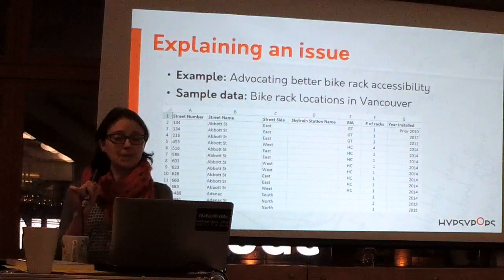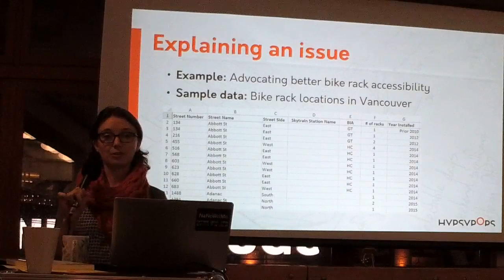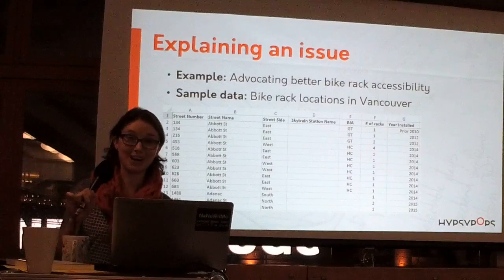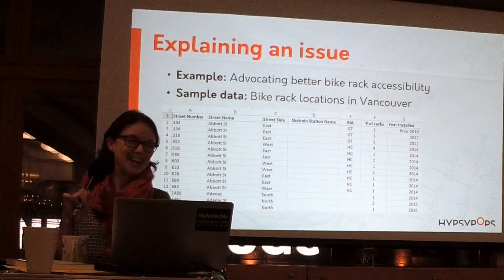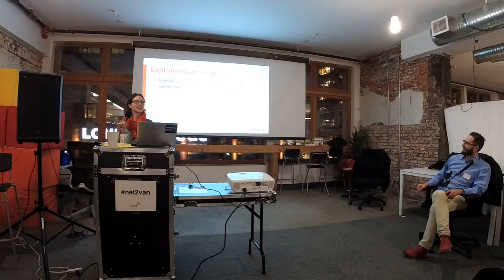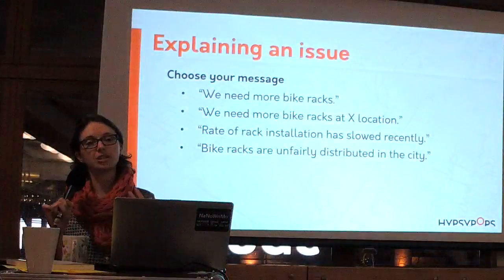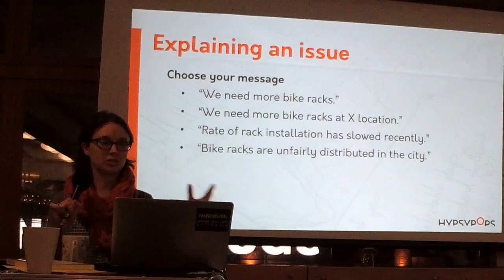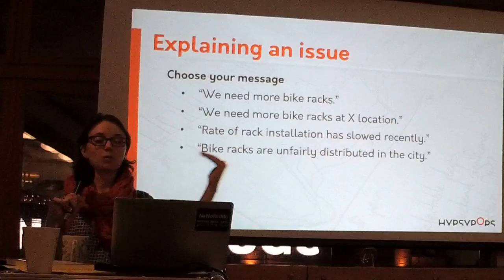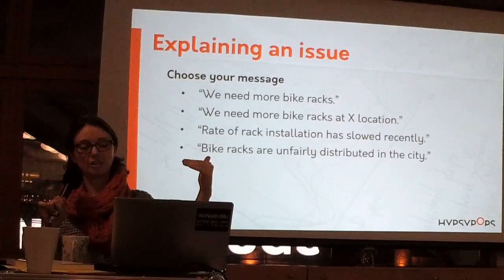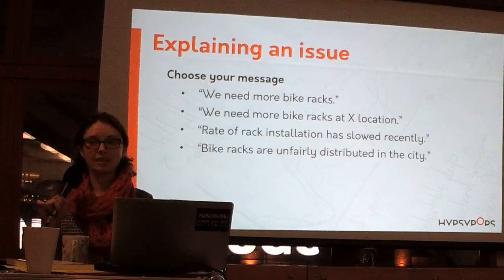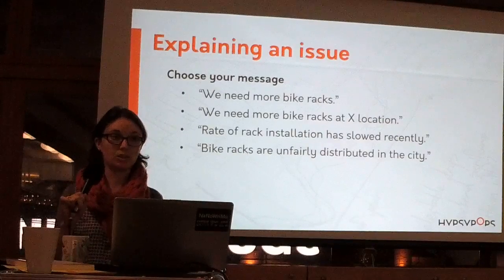As my sample data set, I went to City of Vancouver's Open Data Treasure Trove and found a data set on bike rack locations in Vancouver. We'll pretend that we are advocating better bike rack accessibility in Vancouver. But first we need to choose our message, because different illustration styles serve some messages better than others. So: we need more bike racks; we need more bike racks at X location; the rate of rack installation has slowed recently; bike racks are unfairly distributed in the city.